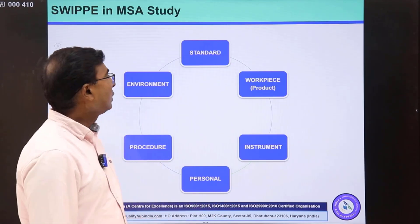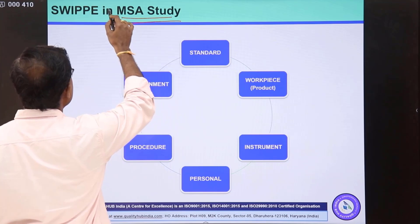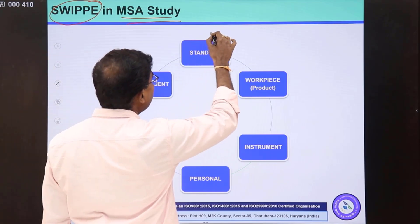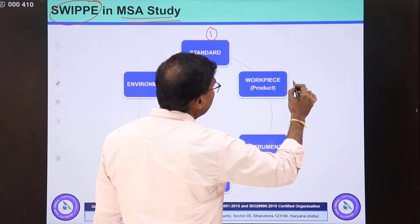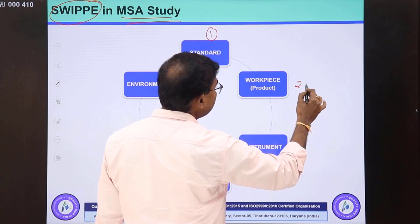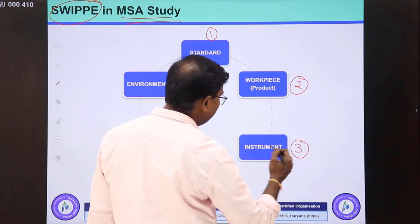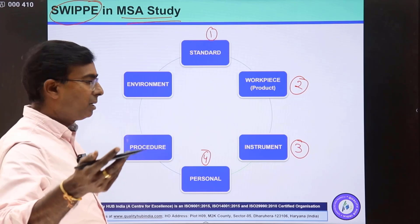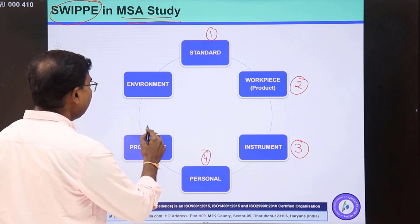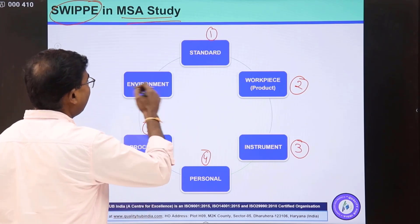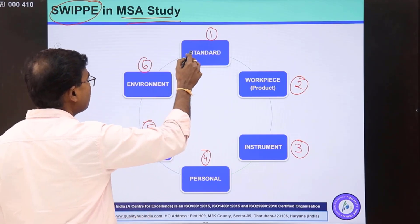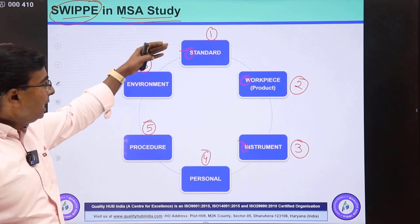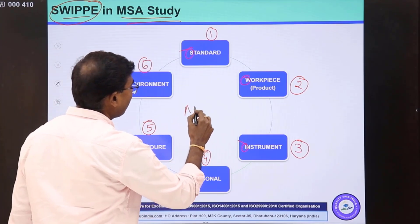So how to conduct an MSA study? For MSA study we use an acronym called SWIPE. S stands for Standard, W stands for Workpiece, I stands for Instrument, the first P stands for Personnel or People — or Appraiser as we typically call it in MSA — and then the fifth one is Procedure and the sixth one is Environment. The first letter of all these elements makes the acronym SWIPE, and for any MSA study we need to have all these six elements.